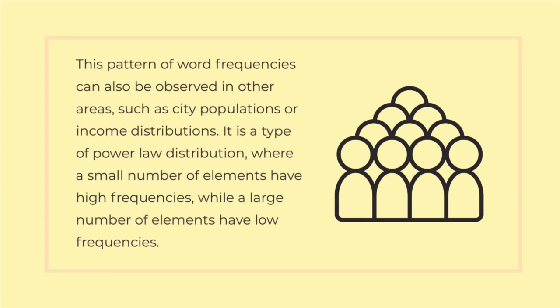This pattern of word frequencies can also be observed in other areas, such as city populations or income distributions. It is a type of power law distribution, where a small number of elements have high frequencies, while a large number of elements have low frequencies.